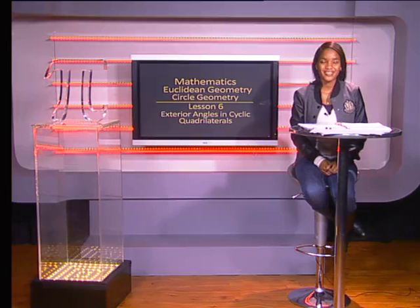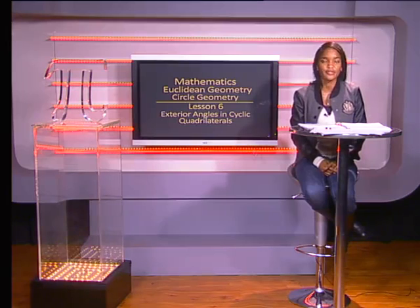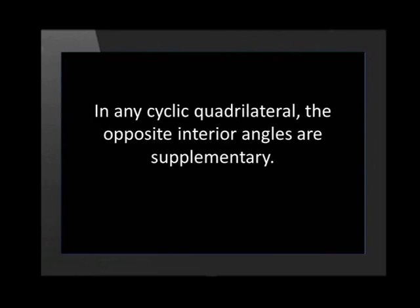Hello Grady Levens. Today we are going to explore the properties of exterior angles in cyclic quadrilaterals. In a previous theorem we learned that in any cyclic quadrilateral the opposite interior angles are supplementary. We can use this theorem to deduce the size of an exterior angle of a cyclic quadrilateral.